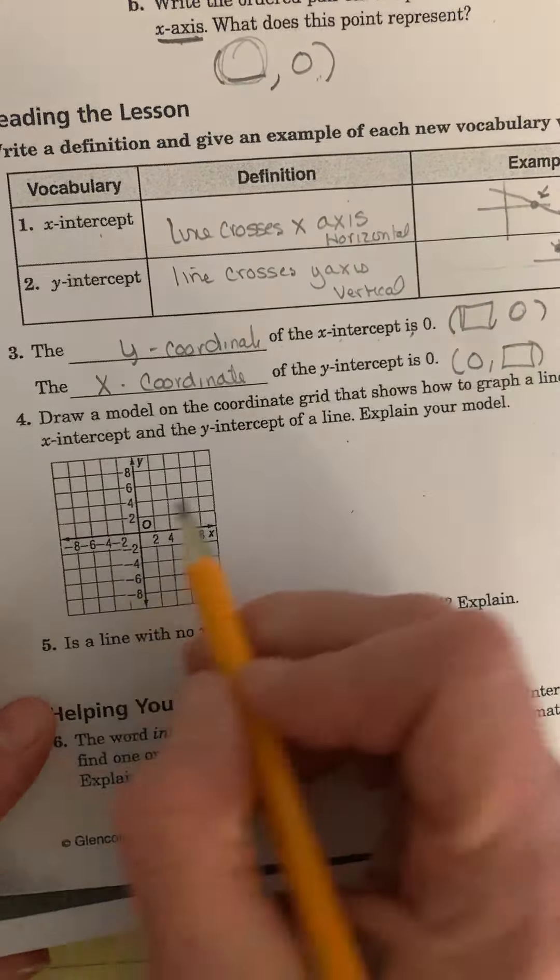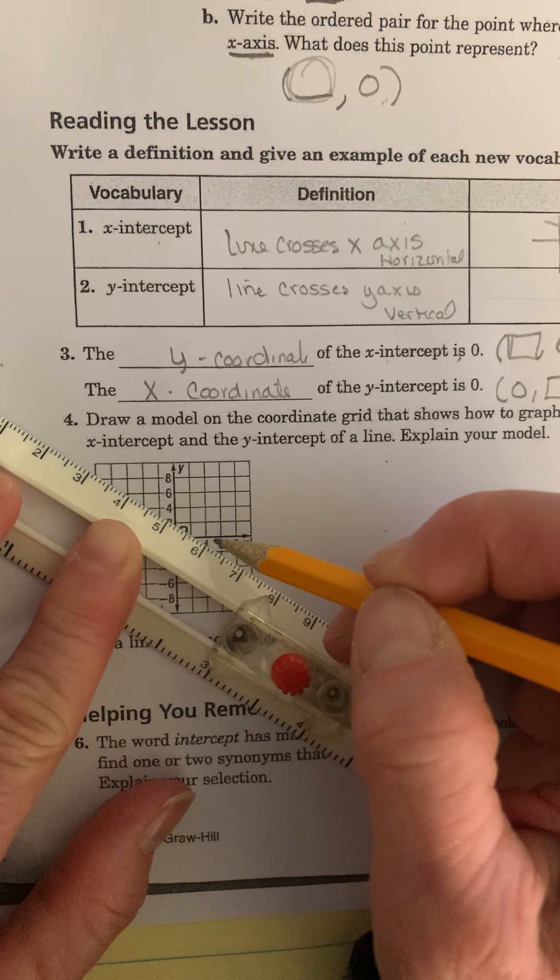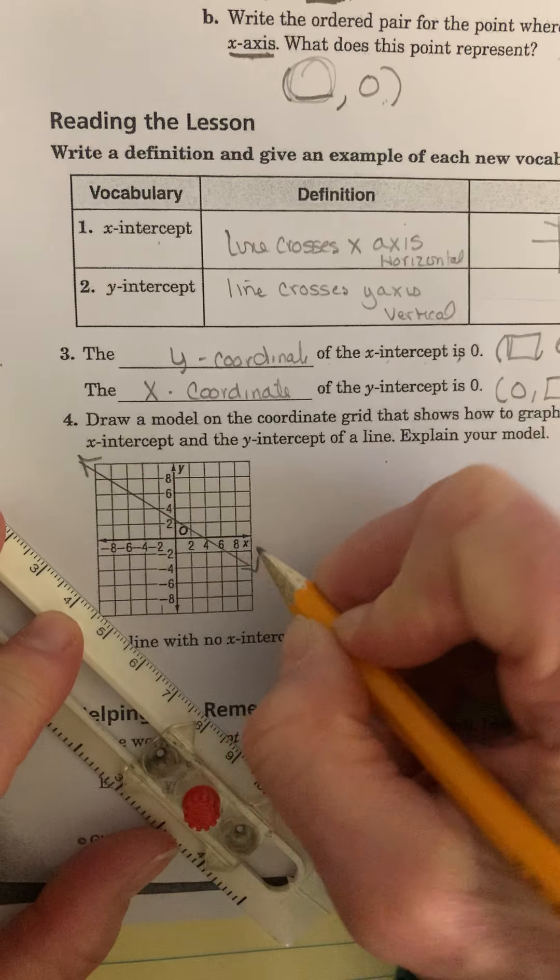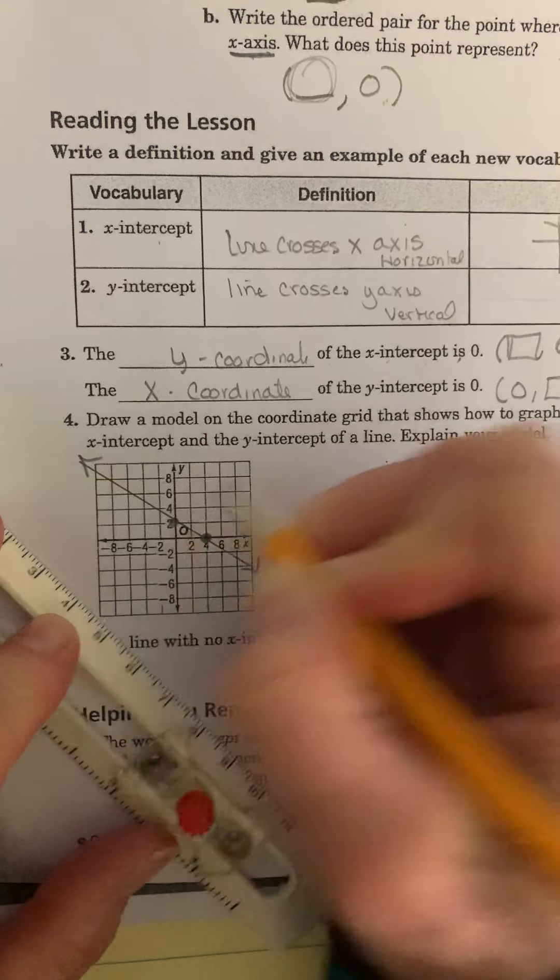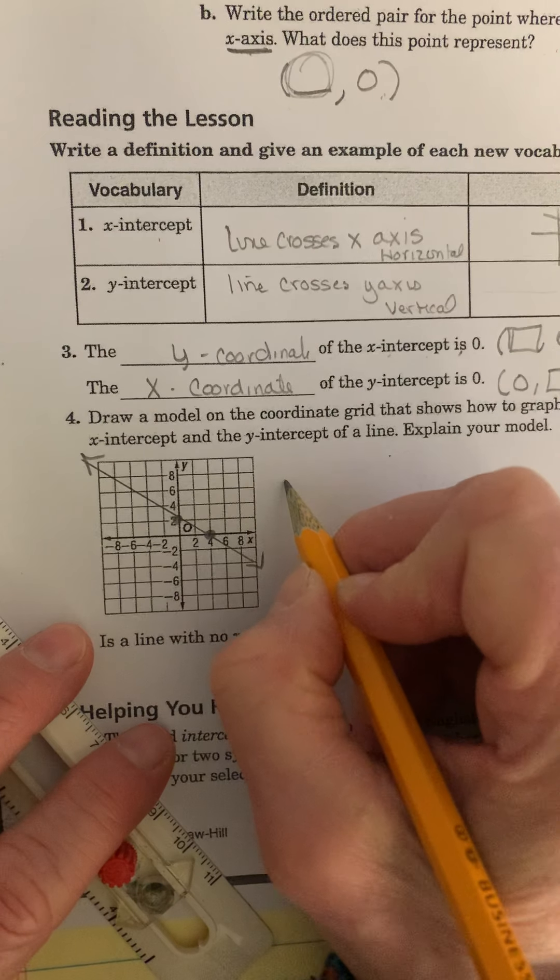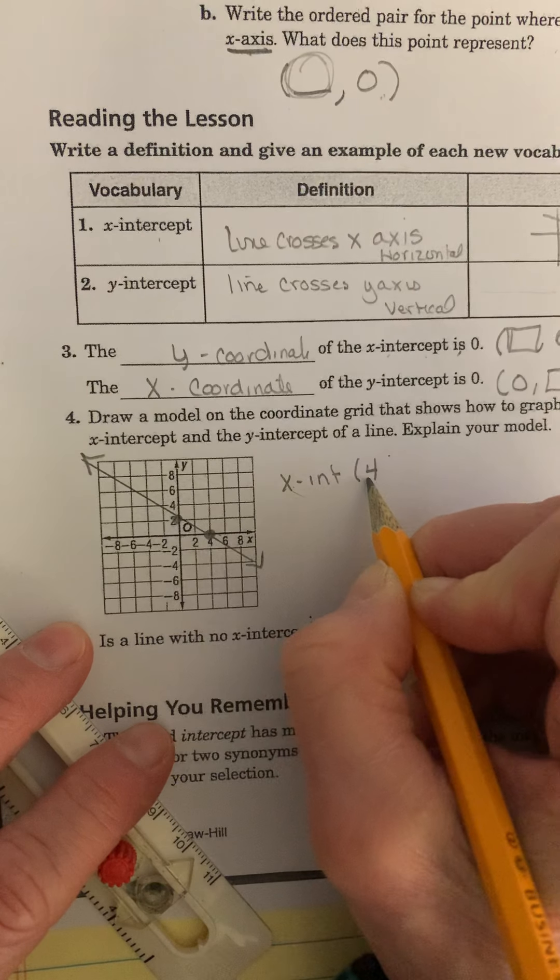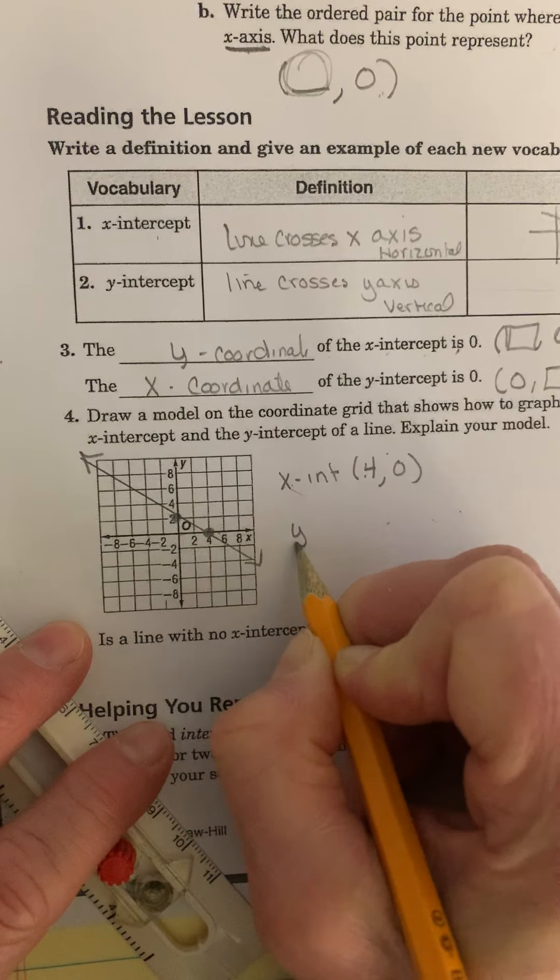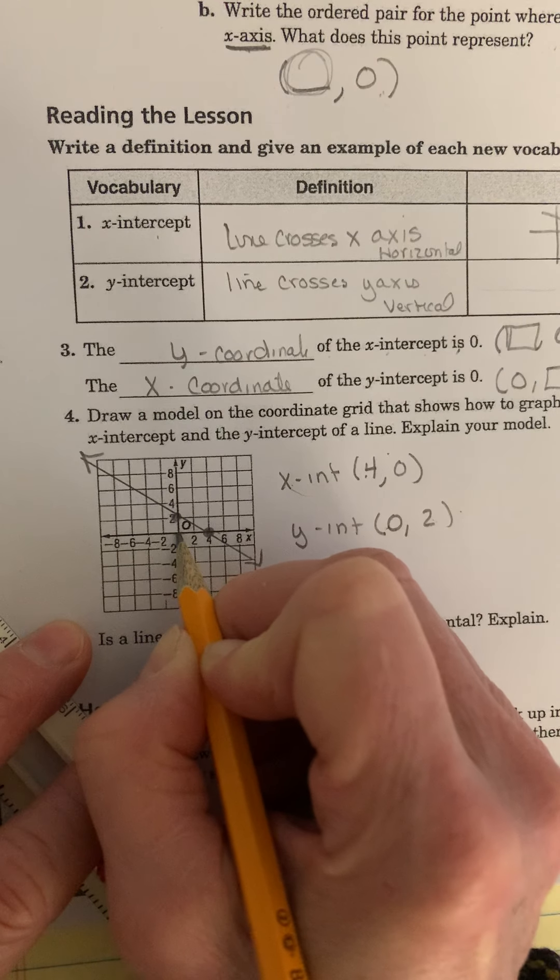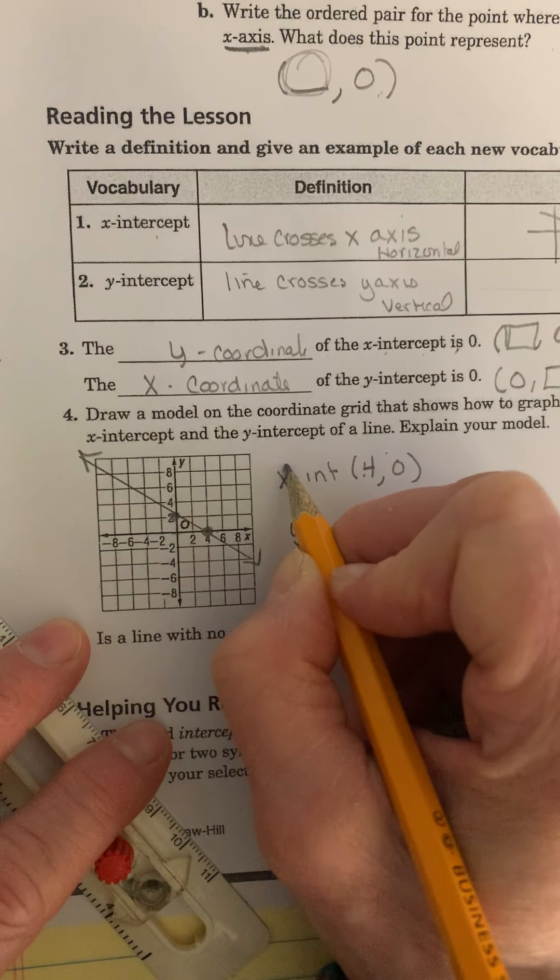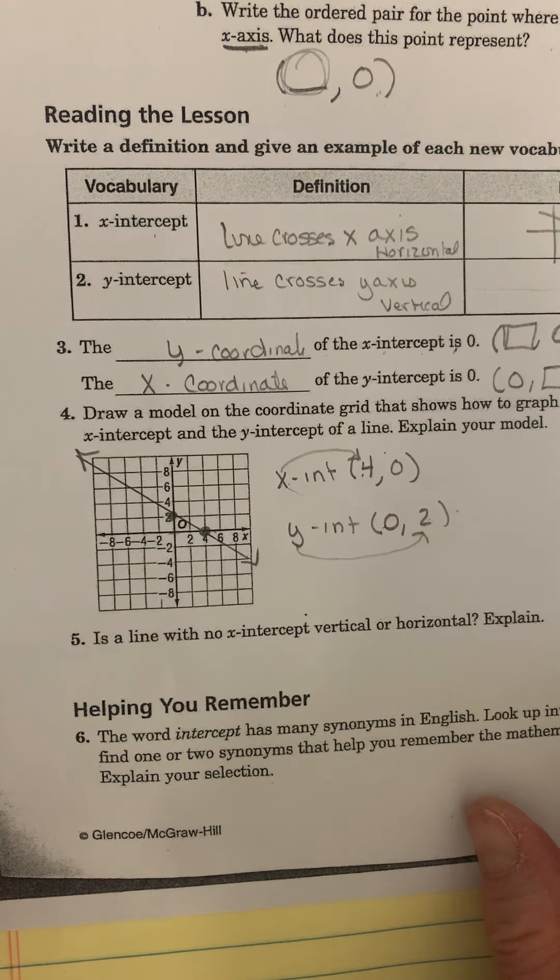So I drew a line right here. Let's say I did it like this right here. My line, put my arrows on the end of it. I can see my intercepts right there. So my x-intercept would be 4. I would have a number for x, 0. And my y-intercept would be 0, 2. Right there, over 0, up 2. So if I want my y-intercept, I have a y value. If I want my x-intercept, I have an x value, and the other ones become 0.